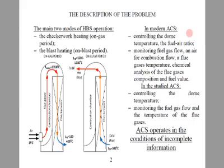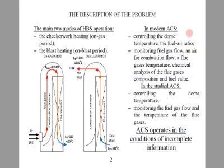In many cases, the hot-blast stone block, further HBSB, consists of 3 or 4 hot-blast stones, further HBS. The block is designed to heat blast air — air enriched with oxygen up to 25–30% — to a temperature of 1,000 to 1,200 degrees, which then enters a blast furnace.